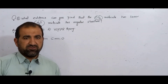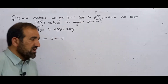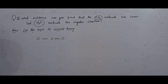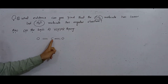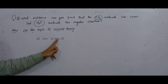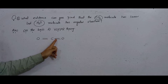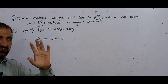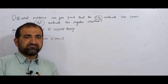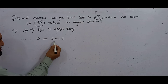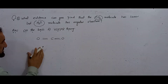The first evidence is VSEPR theory and the second is electric dipole moment repulsion. According to VSEPR, the central carbon in carbon dioxide forms double bonds — two bond pairs on each side. So we have two bond pairs arranged around the central carbon atom.